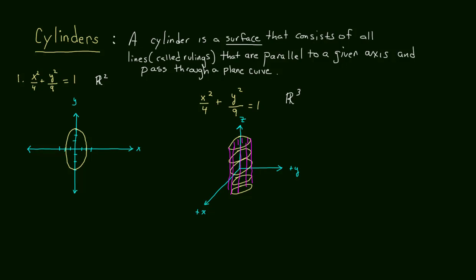Let's take a closer look at the definition. A cylinder is a surface that consists of all lines called rulings. The lines are these pink lines that cut through all of the ellipses. And these lines are all parallel to a given axis. In this case, you can see that these pinkish-purple rulings are all parallel to the z-axis, and they all pass through a plane curve.